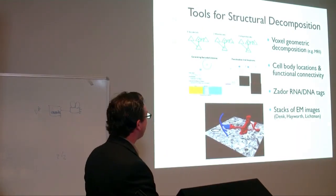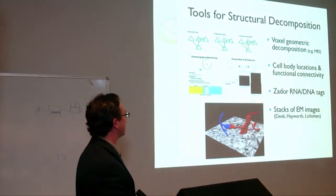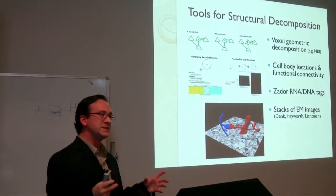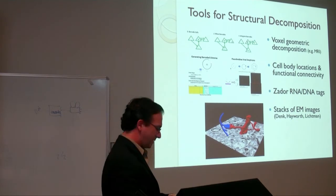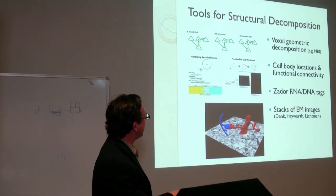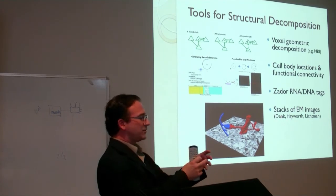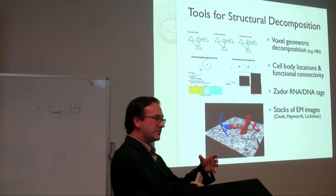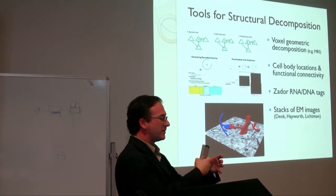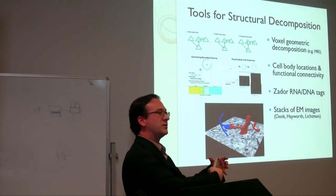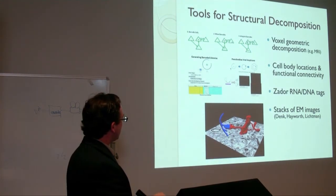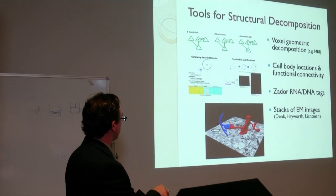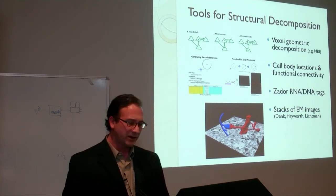The final structural method is stacks of electron microscope images — where some of the best work has been done. Winfried Denk's group takes blocks of neural tissue, images the surface with an electron microscope, ablates about 50 nanometers at a time, images again, working all the way down. You can then reconstruct detailed three-dimensional connectivity — seeing, for example, that this piece of axon connects to that dendrite — all the way through the system at very fine detail.